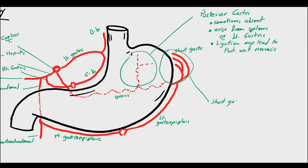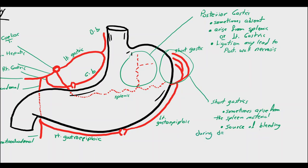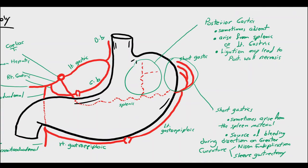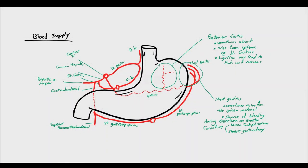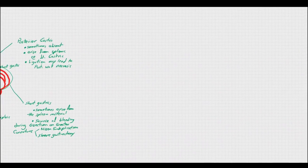Another surgically relevant remark is about the short gastric arteries. They sometimes arise within the splenic hilum and pass from the spleen to the greater curvature of the stomach within the narrow part of the gastrosplenic ligament. They represent a source of bleeding during dissection on the greater curvature of the stomach, especially when performing a Nissen fundoplication or sleeve gastrectomy.